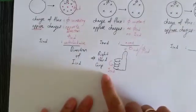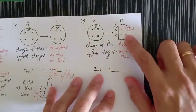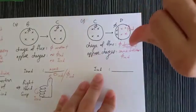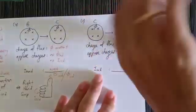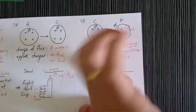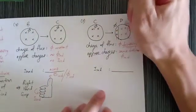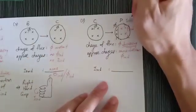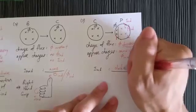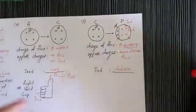Using the right-hand rule, the thumb represents the flux. The flux is into the page, so the thumb points into the page. The current is represented by the fingers, and the fingers curl clockwise. So this is the induced flux, and our current is clockwise. Thank you.